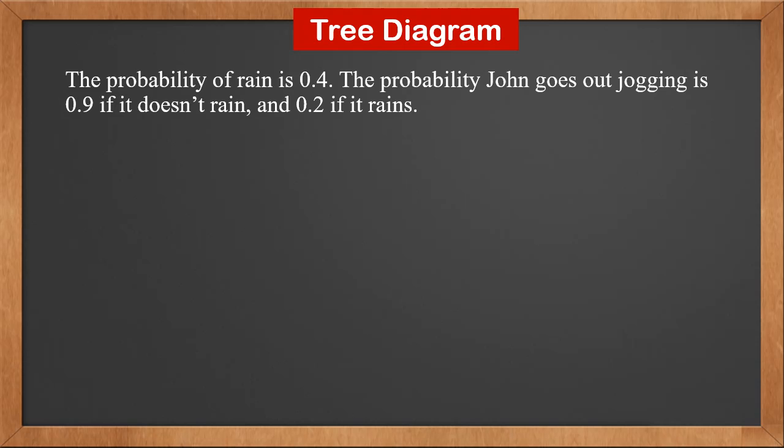Let's take a look at how to draw a tree diagram. The probability of rain is 0.4. The probability John goes out jogging is 0.9 if it doesn't rain, and 0.2 if it rains.